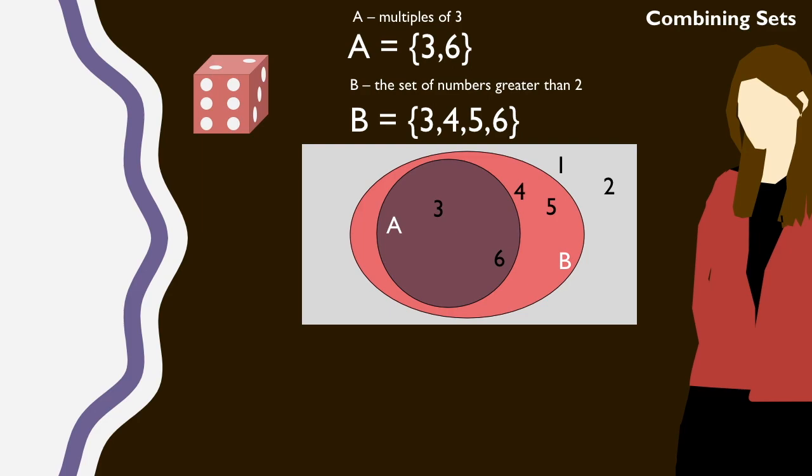Now if we consider conditional probabilities in this case, we have the probability of A given B, so this is our probability of 3, 6, as a fraction of the probability of 3, 4, 5, 6.